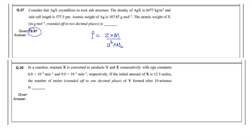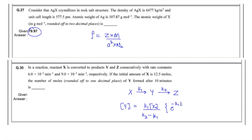The next question was on consecutive reactions: X → Y → Z with rate constants k₁ and k₂. The concentration of Y is given by [Y] = (k₁[X]₀ / (k₂ − k₁)) × (e^(−k₁t) − e^(−k₂t)). Putting in the given values with t = 10 minutes (units are already in min⁻¹ so no conversion needed), the concentration of Y comes out to be 5.36.